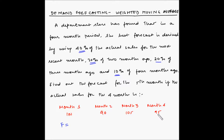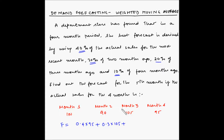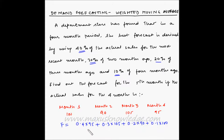The forecast will be equal to: 40 percent of the fourth month sales, so 0.4 multiplied by 95, plus 30 percent of the third month sales, so 0.3 multiplied by 105, plus 20 percent of the second month sales, so 0.2 multiplied by 90, plus 10 percent of the first month sales, so 0.1 multiplied by 100.